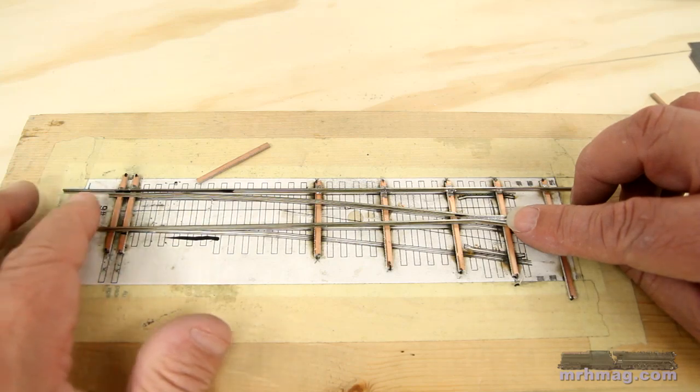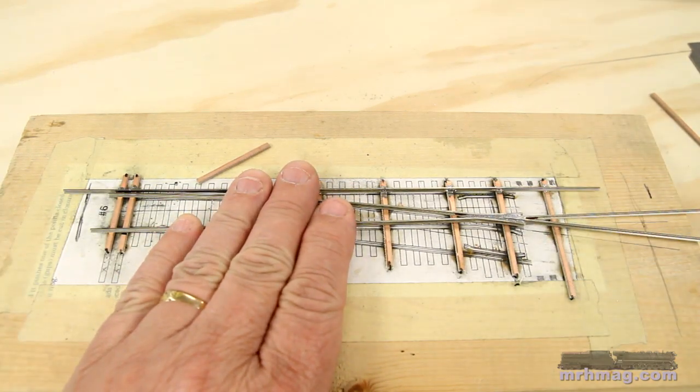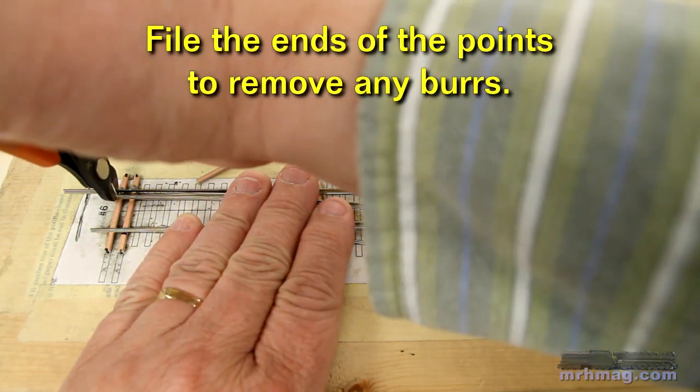Now it's time to finish and install the frog and closure rail assembly. I hold the assembly in place using the frog point to locate it, then I cut the ends of the closure rails to length.